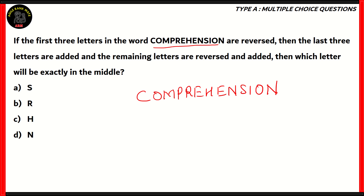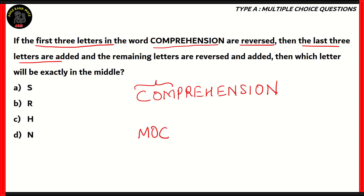First they say to reverse the first three letters in the word. So let's take the first three letters, C, O, and M, and then reverse them. We will get M, O, C. Then they say to add the last three letters. The last three letters are I, O, and N.